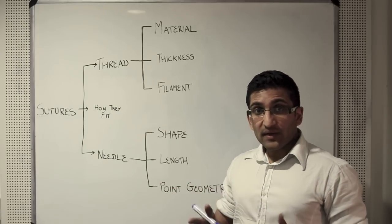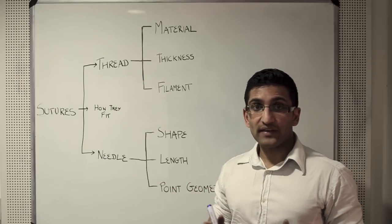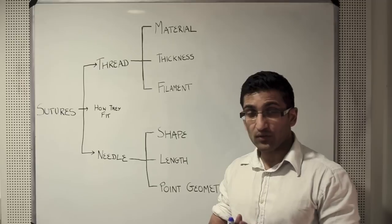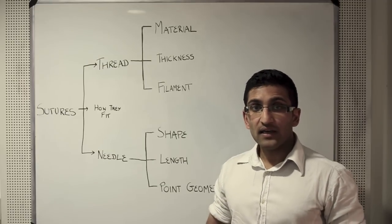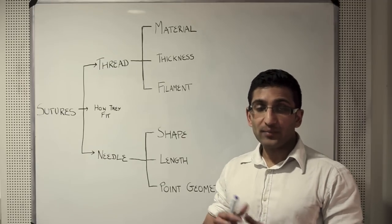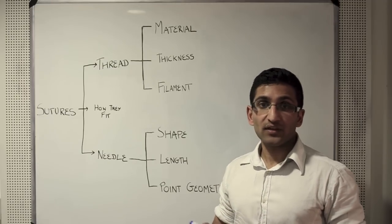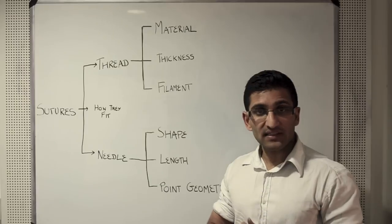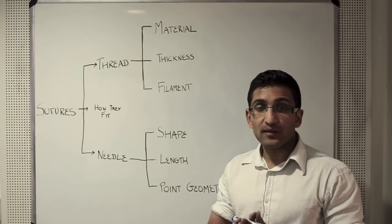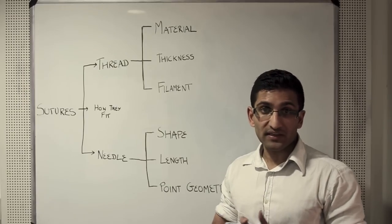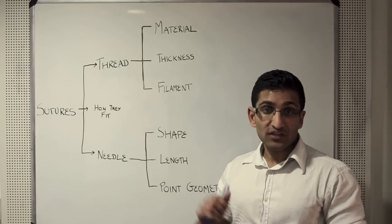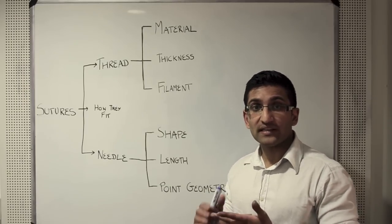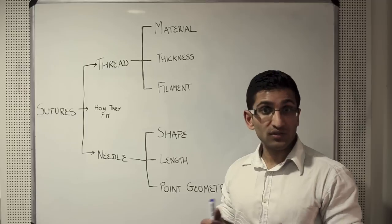Thinking about healing, there are two main ways of healing: healing by primary intention or healing by secondary intention. Healing by primary intention is where you bring either edge of the wound together and fix it in place, and this can be done by a number of different things such as surgical staples, surgical tape, biological adhesives, or sutures.